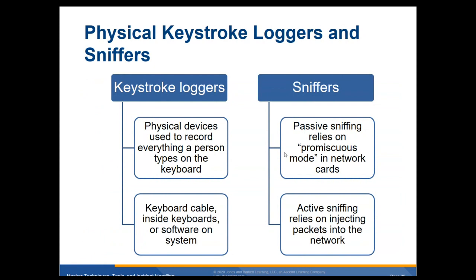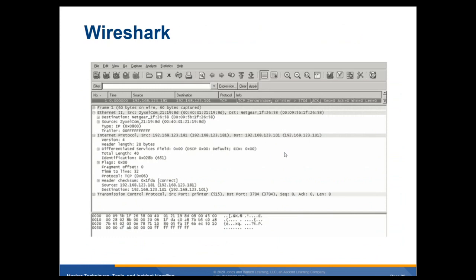Physical keystroke loggers: a physical device used to record everything a person types on the keyboard — can be in keyboard cables, inside keyboards, or as a software system. You can have a software or hardware keylogger. Sniffers: passive sniffing relies on promiscuous mode on the network card — you guys have done this in your labs, basically capturing packets. Active sniffing relies on injecting packets into the network. Wireshark — this should all look familiar — it's capturing packets and it's a very popular tool.